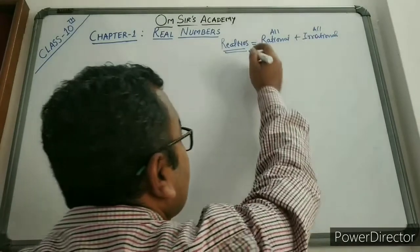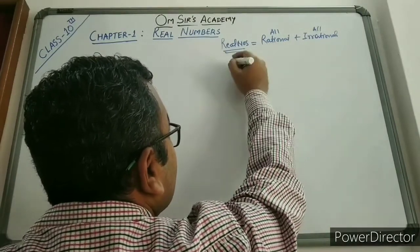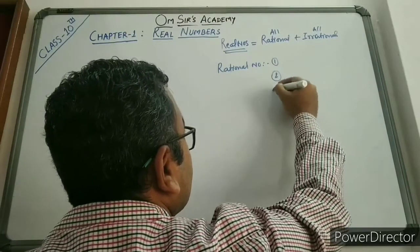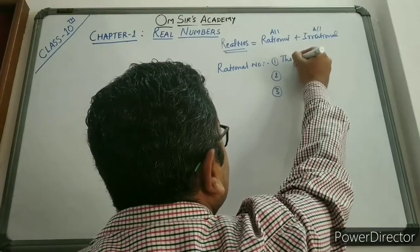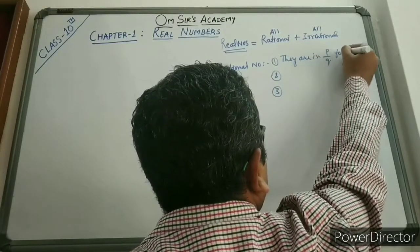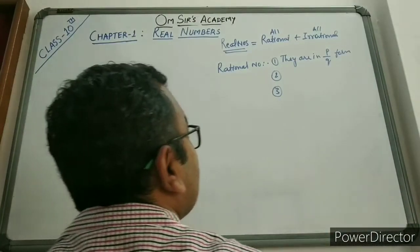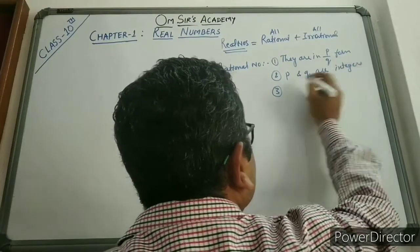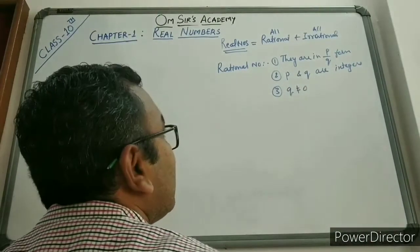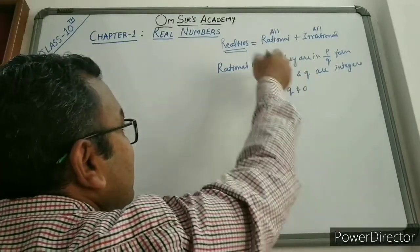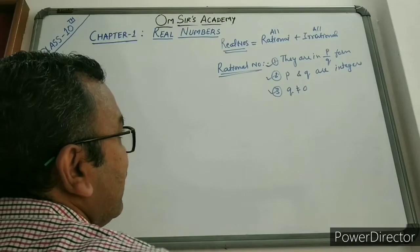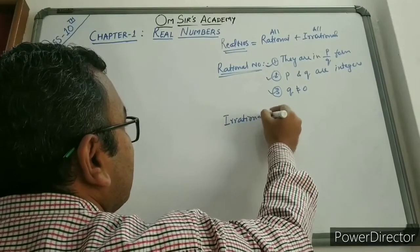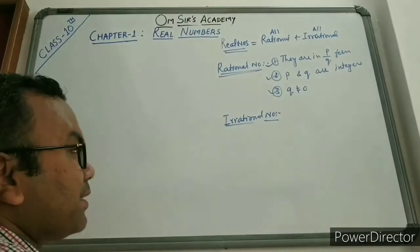We have already learnt in Class 9 what a rational number is. A rational number satisfies 3 conditions. First, they are always in P by Q form, where P is the numerator and Q is the denominator. Second, P and Q are integers. Third, Q should not be equal to 0. If all these conditions are satisfied, the number is rational. If any one of these 3 conditions does not satisfy, the number is an irrational number.